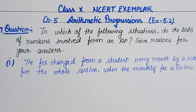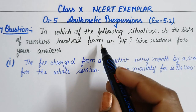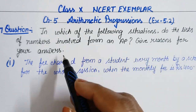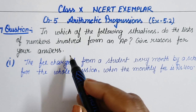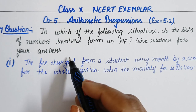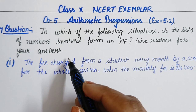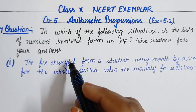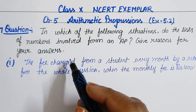Question number 7 is: in which of the following situations do the list of numbers involved form an AP? Give reasons for your answer. This means that we have different situations given, and we will provide our answer with the reason.